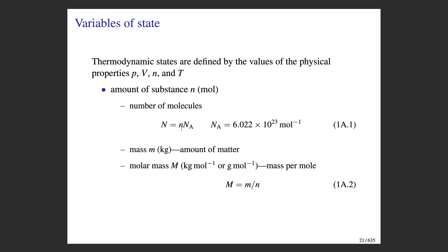Lowercase n is the total number of moles. N subscript A is the Avogadro constant, which converts between number of moles and number of molecules, and it has a value of 6.022 times 10 to the 23 molecules per mole.